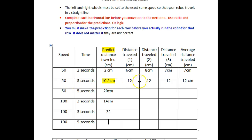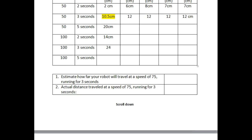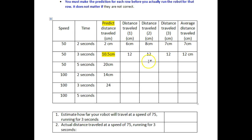Make sure that you make the predictions, and make sure that you run each row, and use this number to predict the next one. Then you're going to answer the next few questions. Question 1: estimate how far your robot will travel at a speed of 75 running for 3 seconds. You know how far it's going at a speed of 50 for 3 seconds and at a speed of 100 for 3 seconds, so it should be easy enough to estimate how far it would go at 75. Then run the robot at a speed of 75 for 3 seconds and write down how far it actually went. They should be pretty similar.